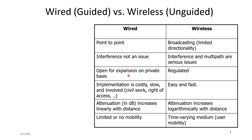Wireless systems are open for expansion, but they are regulated — if you want to expand the bandwidth or cover a certain region, you need regulatory approval and must respect the regulations. Wired implementation is costly, slow, and sometimes involves civil work such as digging and right-of-access issues. However, in wireless it's easy and fast.